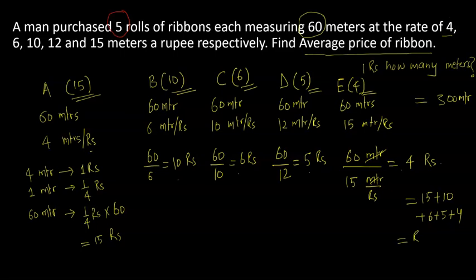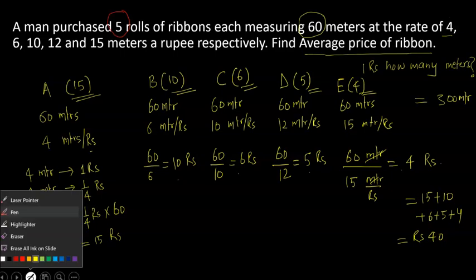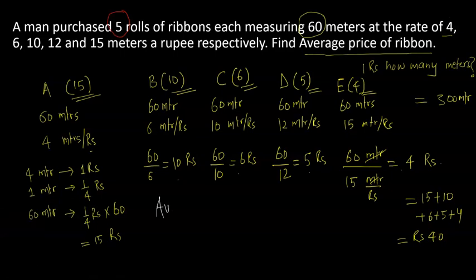So that means 15 plus 5, so that makes it rupees 40. So average price of ribbon - the average price of the ribbon.